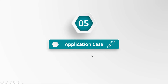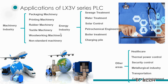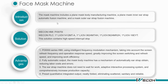Finally, we'll talk about application cases. The 3V series POCs are already used in the machinery industry and the energy industry — including packaging machines, printing machines, and textile machines. For the energy industry, they have been used in boiler treatment, storage control, and water treatment. Due to the coronavirus, Wecon POC has also been used in face mask machines.